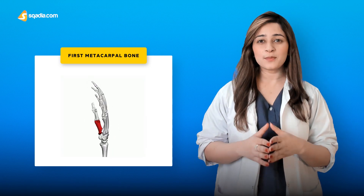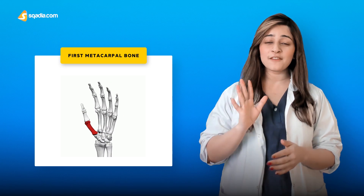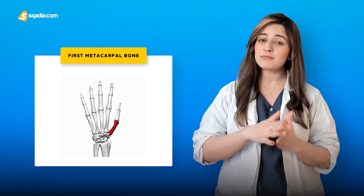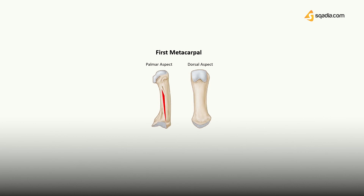The first metacarpal bone is the most lateral one. It is one of the thickest and smallest among the five metacarpals. Its long axis is medially rotated 90 degrees. A longitudinal ridge is present on its medial or palmar surface, dividing it into a large lateral and a small medial part. The head of this bone is flattened compared to the other metacarpals. Its base has a saddle-shaped articular surface, through which the first metacarpal articulates with the trapezium bone.